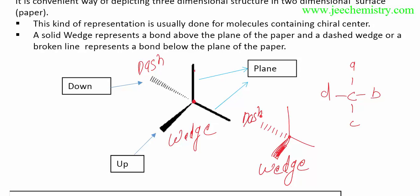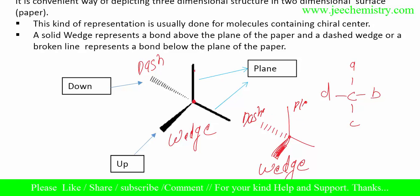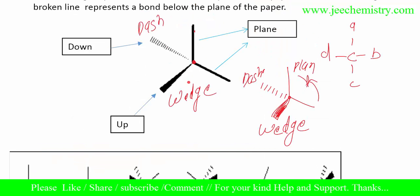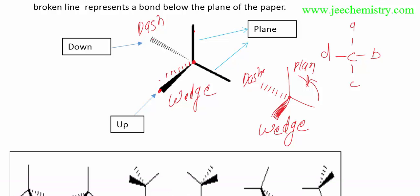So two bonds are in the plane, one is a wedge (towards the viewer, coming out of the plane), and one is a dash (going backward, away from the viewer). The wedge is on the upward side towards you, and the dash is on the backward side. For simplification, I have shown them side by side, but actually the dash is behind the wedge.